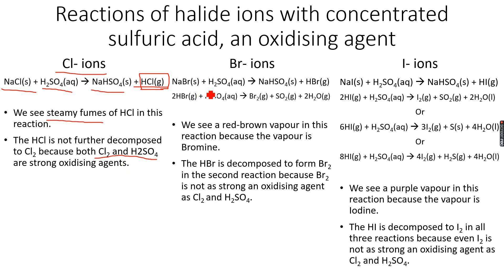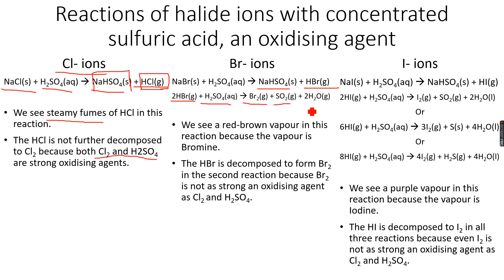In the case of NaBr solid, when we add it to H₂SO₄, we again get NaHSO₄ and HBr. However, bromine is not as strong an oxidizing agent as chlorine. Therefore, H₂SO₄ is powerful enough to oxidize HBr to Br₂, and the other products are SO₂ and H₂O (liquid). Br⁻ has been oxidized to Br₂, and this reaction only takes place because Br₂ is not as strong an oxidizing agent as concentrated H₂SO₄.